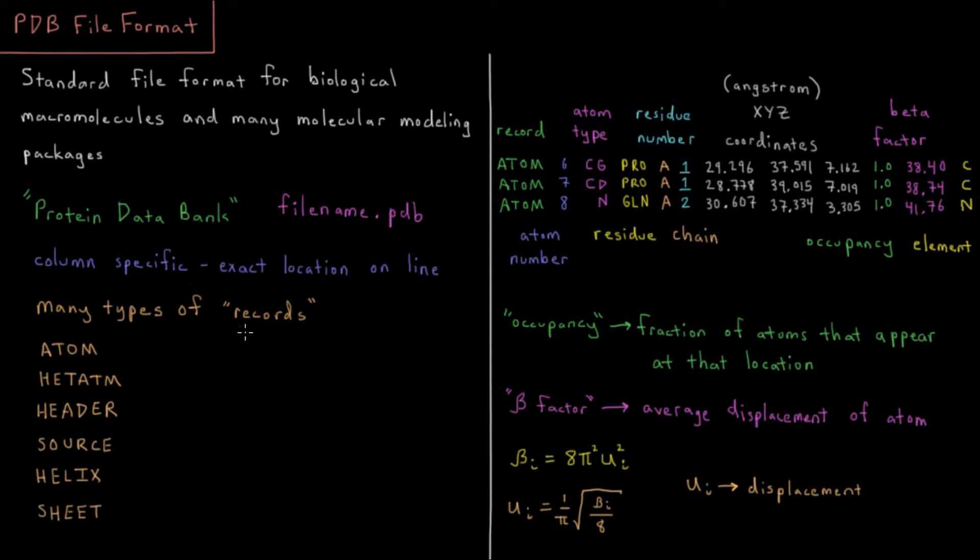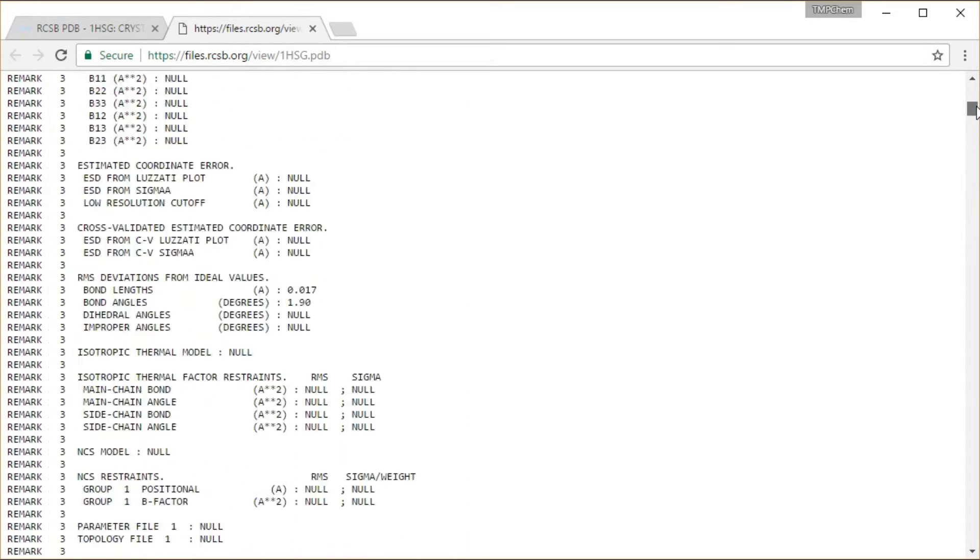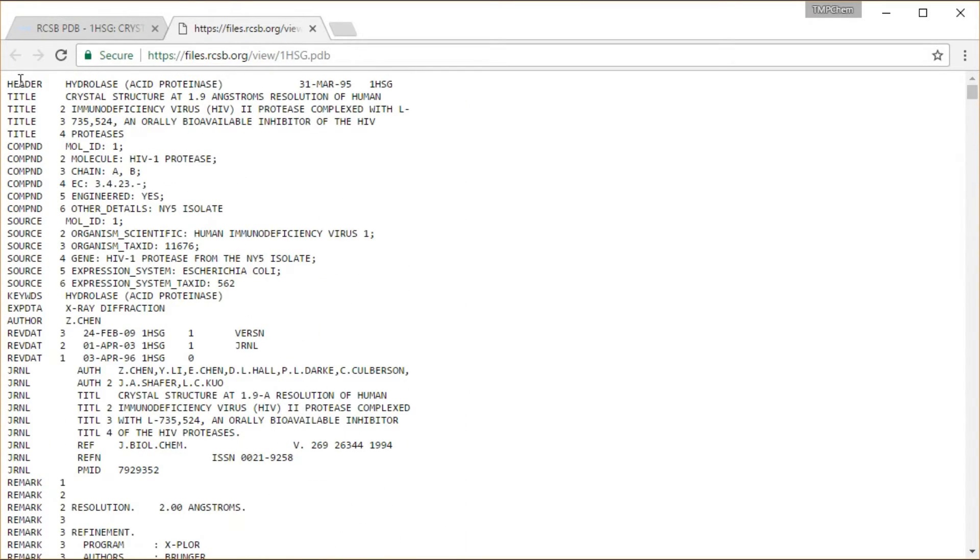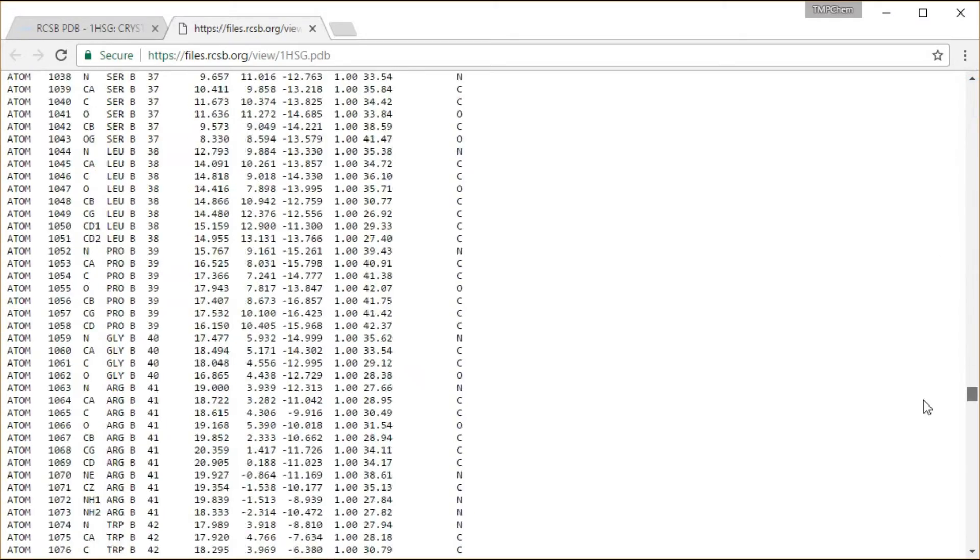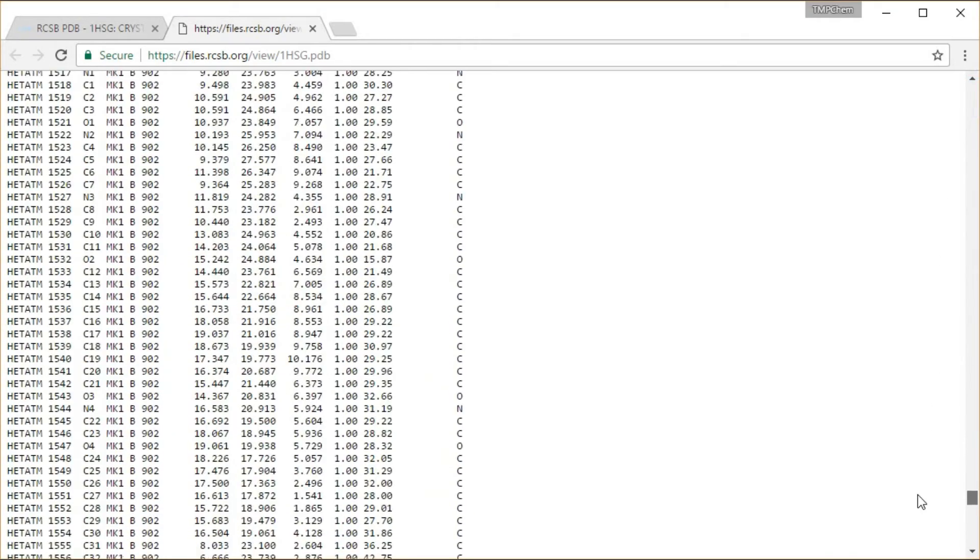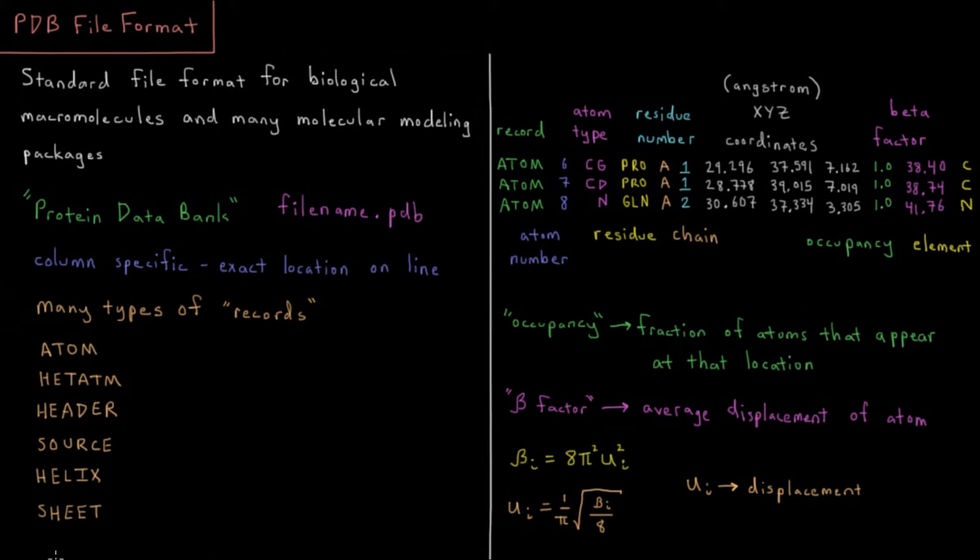In these PDB files you'll see lots of what are called records. These records have headers. The first symbol or the first string in a line is usually something like header, title, compound, atom, heteroatom, those sorts of things. Those indicate what type of record follows on the following line.